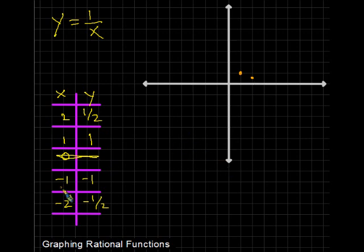And then we get x is negative 1, and y is negative 1. So right there. And then we get x is 2, and y is negative 1 half. So we go right there.